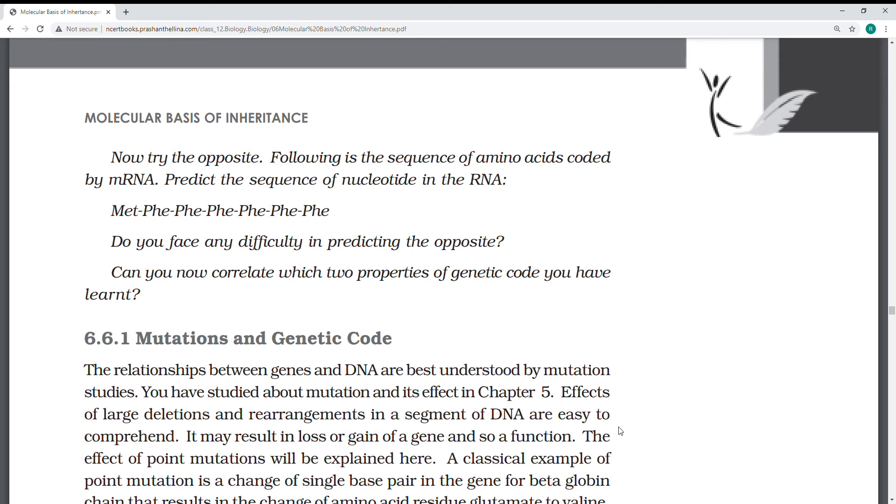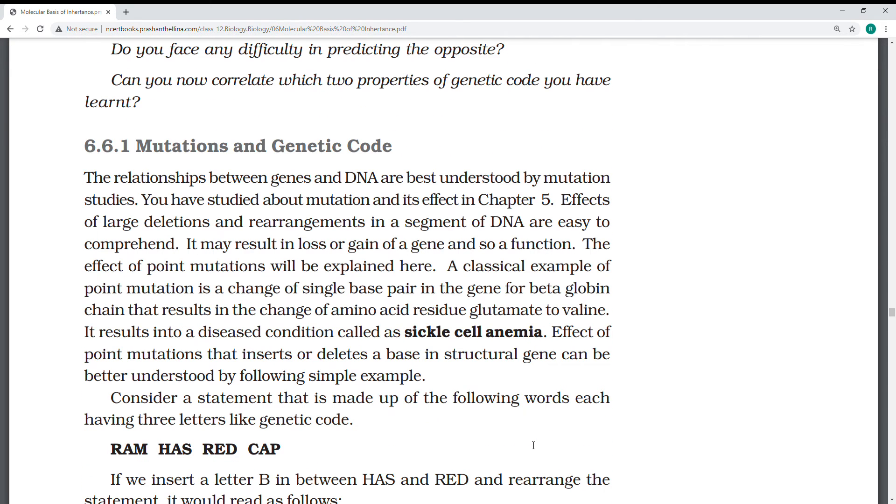Another one which is included here: what is wobble pair? The wobble pair is nothing but the ability of tRNA with mRNA to have particular codons. When tRNA is coming and binding there, instead of U, generally A only pairs. But here in wobble pairing, you see uracil can pair with guanine. That is called wobble pairing, not like Watson and Crick base pairing. This is sometimes one more three-mark question which comes.